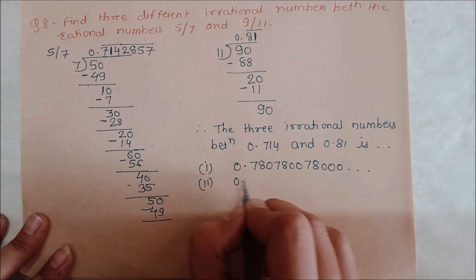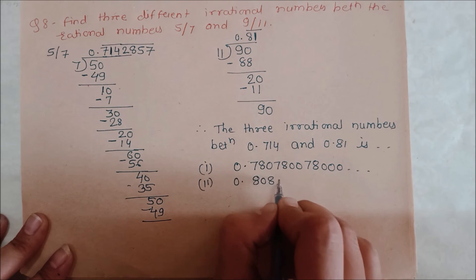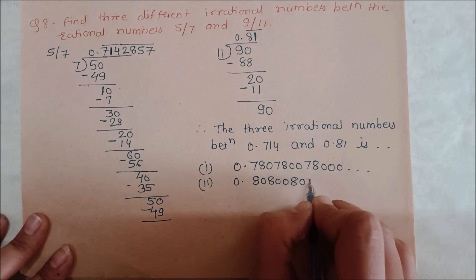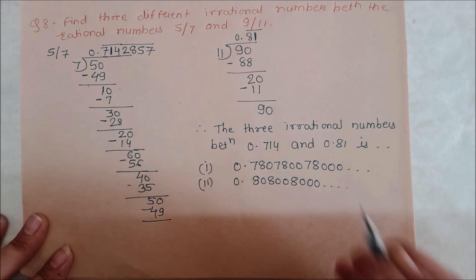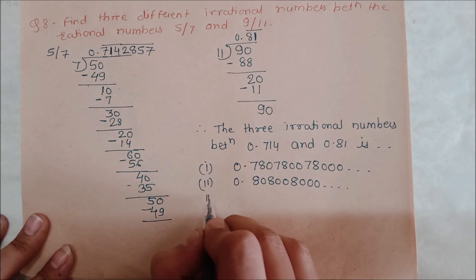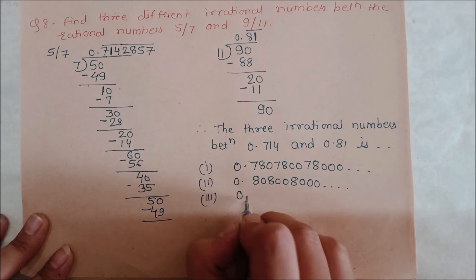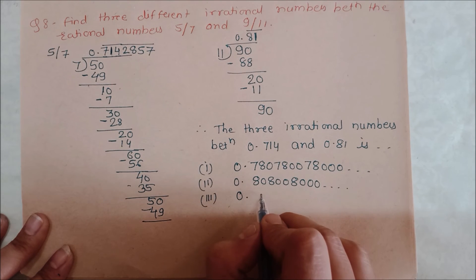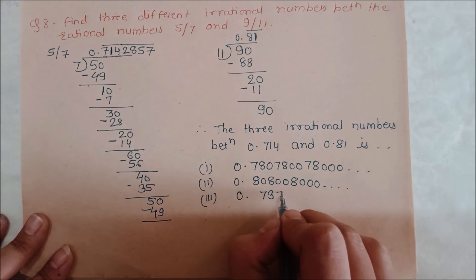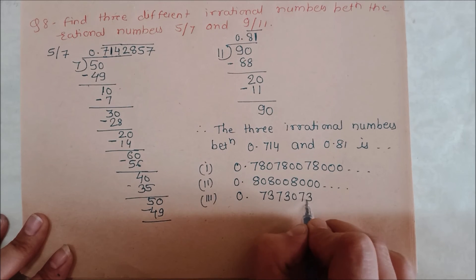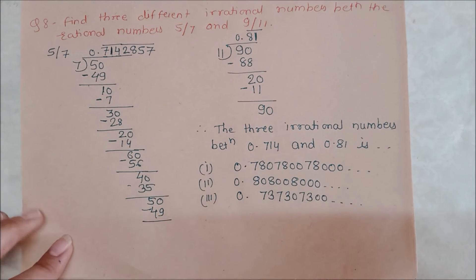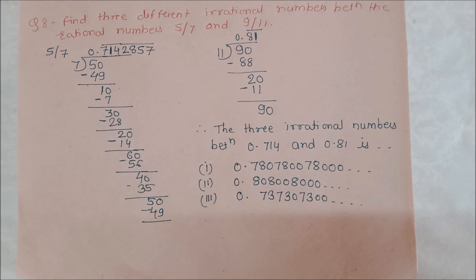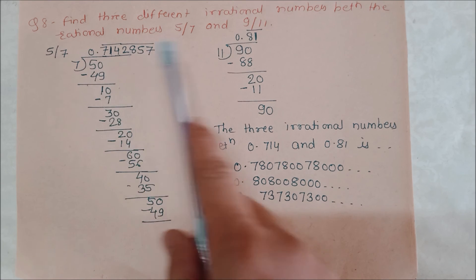We can continue. I can take a number like 0.737307300. These are three numbers which are irrational, which will not be finished or repeat, and they are exactly between each other.